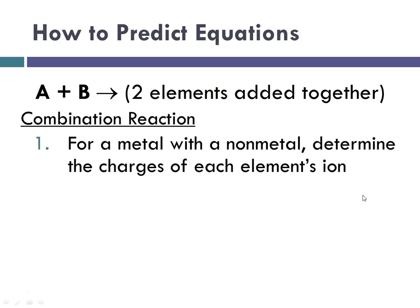If we're going through for a combination or synthesis—and again we use the terms interchangeably—if it's a metal with a nonmetal, then the result is going to be a binary ionic compound. So we would need to determine the charges of each of the element's ion in that case.